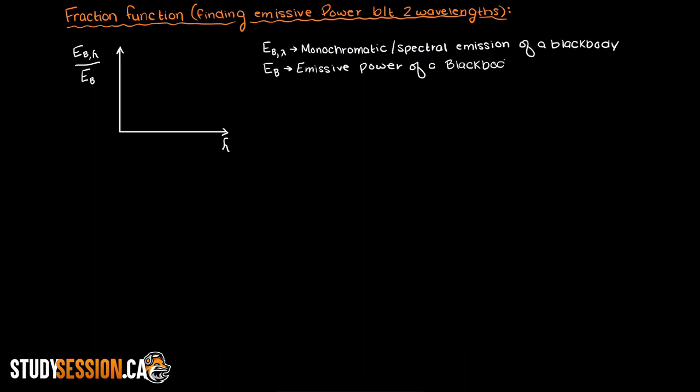By this I mean if we have this emission distribution curve here, how do we determine what fraction of the total emissive power is coming from this range of wavelengths?